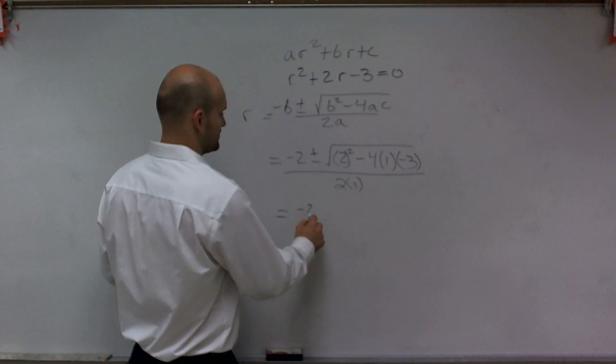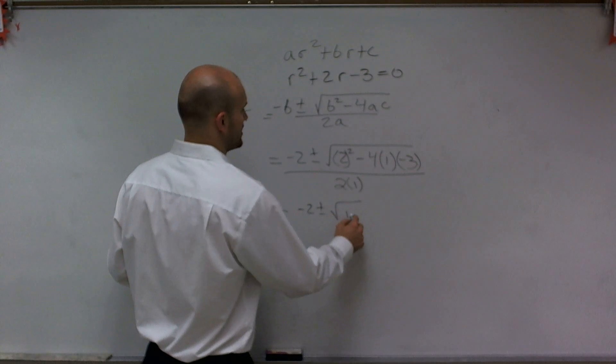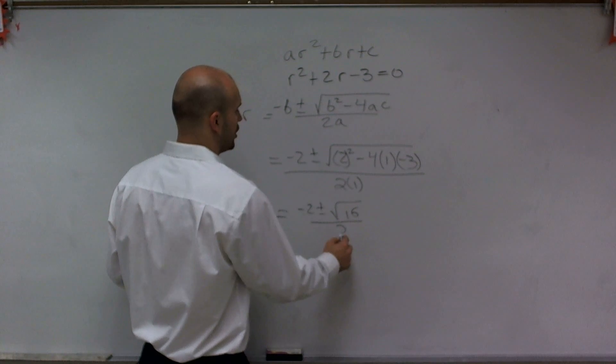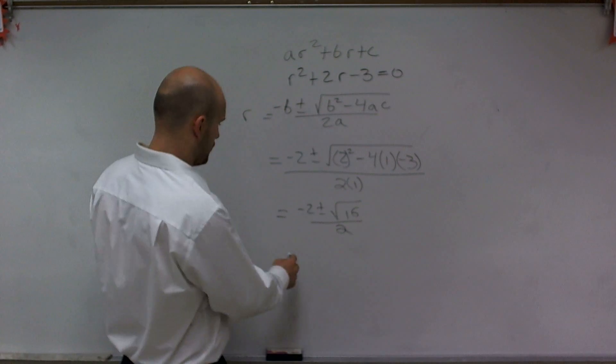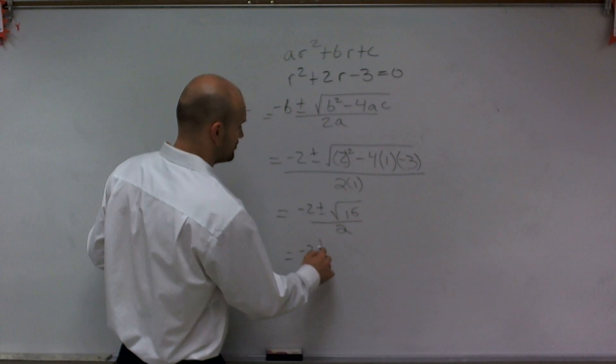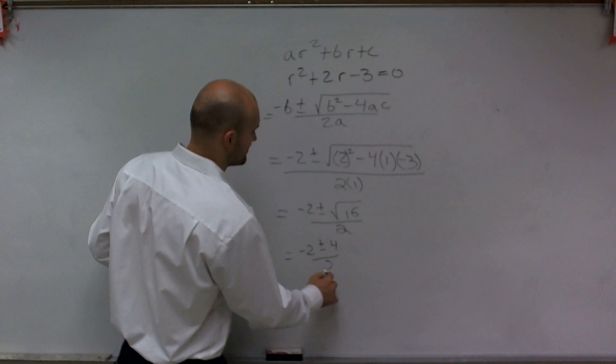So I have negative 2 plus or minus the square root of 16 all over 2. Well, I can evaluate the square root of 16, which is going to be 4. So I have negative 2 plus or minus 4 divided by 2.